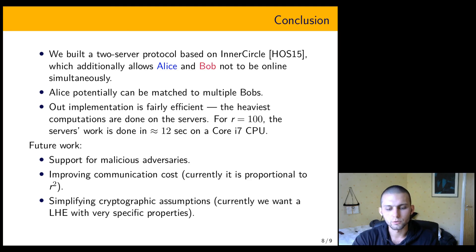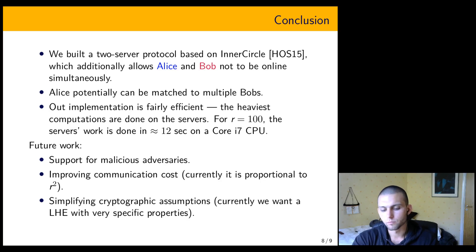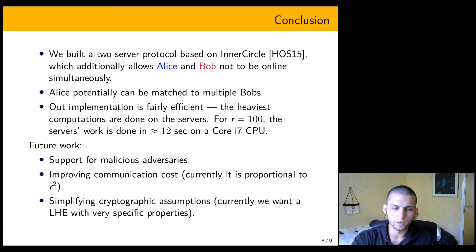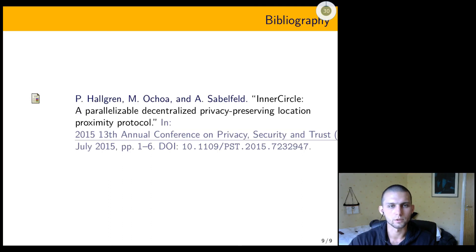Things that can be improved in the future include support for stronger adversaries — right now we only handle semi-honest adversaries who follow the protocol, but it would be interesting to handle parties that behave arbitrarily. Reducing the communication cost proportional to r squared would also be valuable. We could also try to simplify cryptographic assumptions, for example looking for a protocol that works with any linearly homomorphic encryption rather than a very specific one, or perhaps doing something without any homomorphic encryption at all.